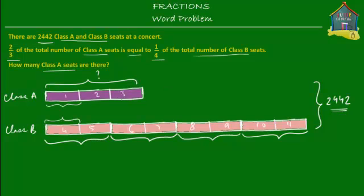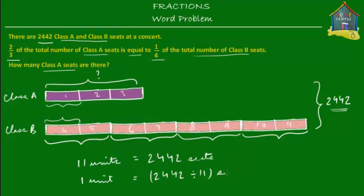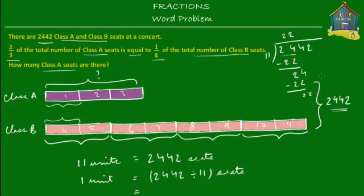We can find out what 3 units equal — which is the number of Class A seats. So, 11 units equal 2,442 seats, and 1 unit equals 2,442 divided by 11. Calculating: 11 goes into 24 two times with remainder 2, bring down the 4 gives 2, bring down the last 2 gives 2. So that's 222 seats.